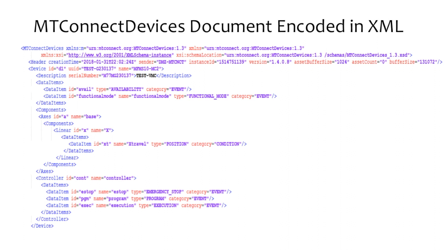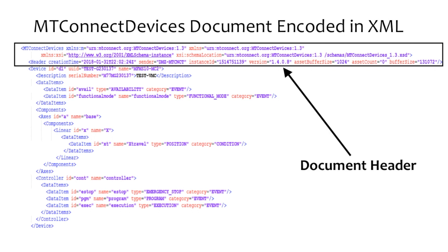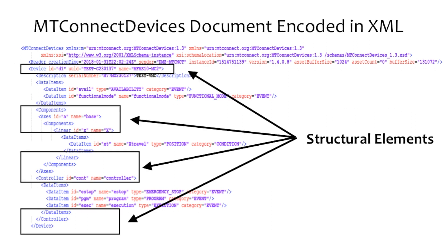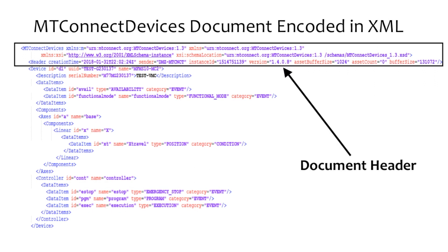Focusing on the operation and status of a piece of equipment, an MT-Connect agent responds to a request for information by publishing a response document encoded using XML. As an XML-encoded document, a response document has two primary sections: a header and a document body. The header section provides information including XML and agent version information, agent storage capacity, parameters associated with data management within the agent, and XML information required for a software application to properly decode the contents of the document.